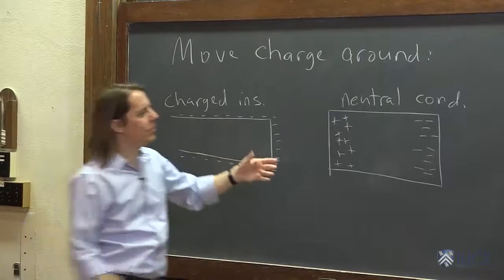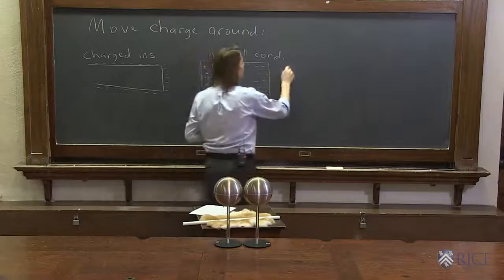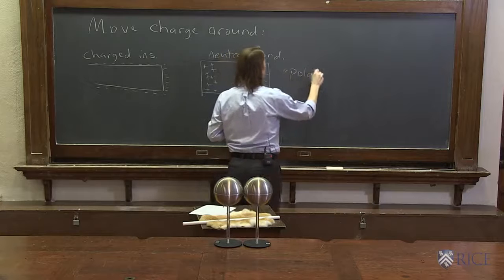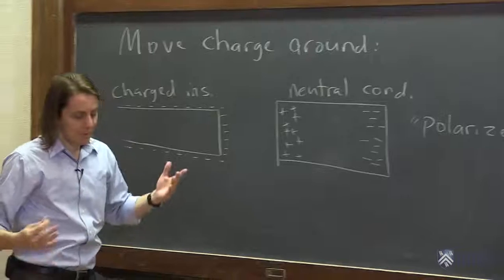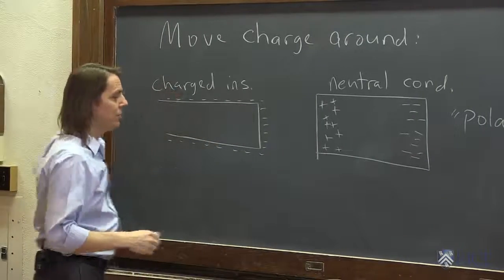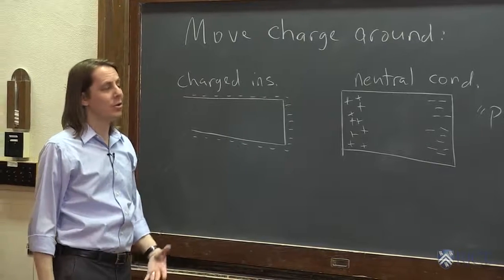So the presence of the charged insulator separates the charge in the neutral conductor. We call this polarized. We have polarized the conductor. And that's fun to do. You can do that. And when you take the insulator away, they'll go back and it's over. So there's not really much to see.